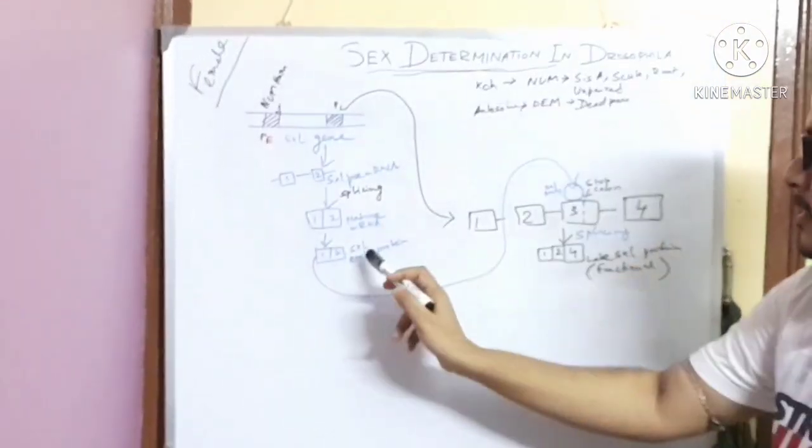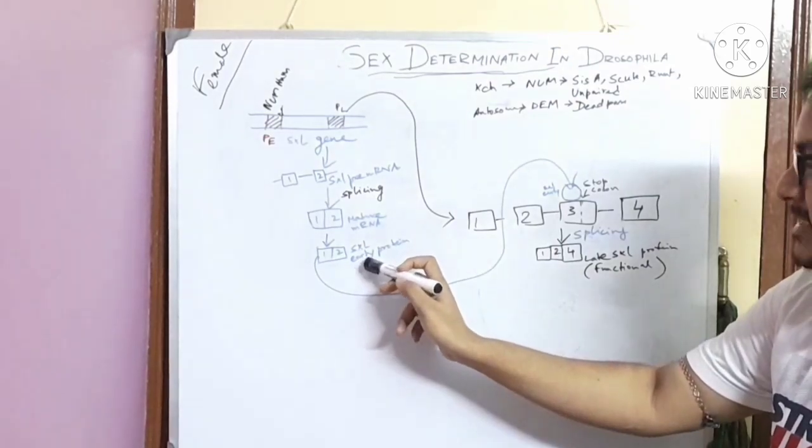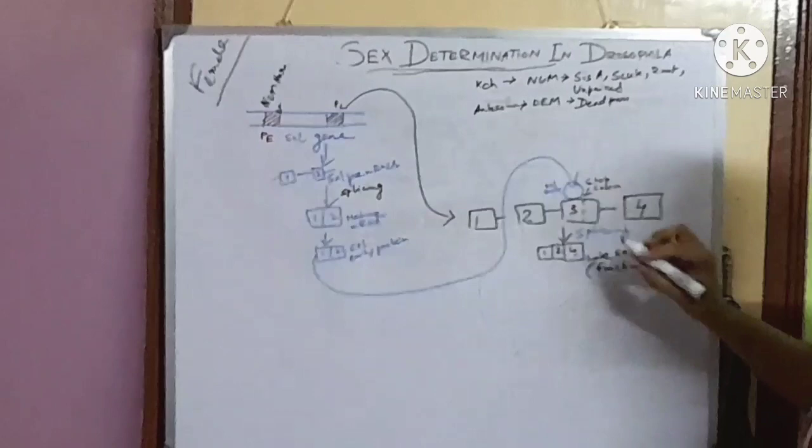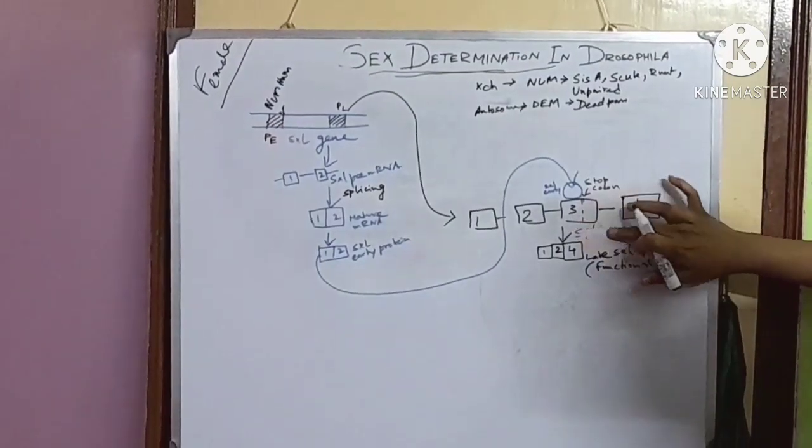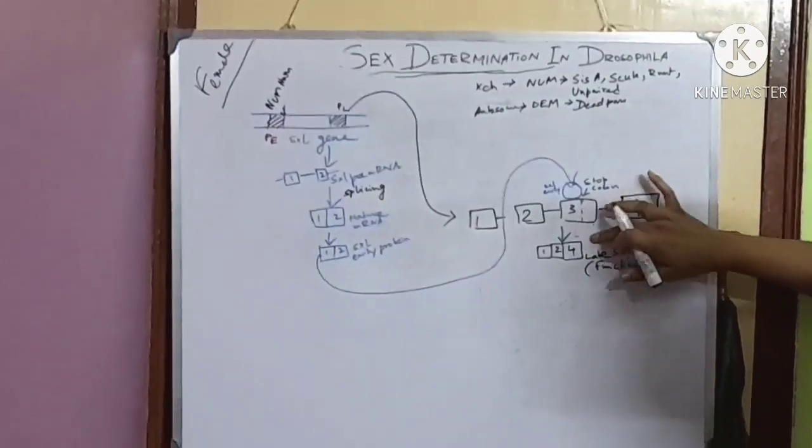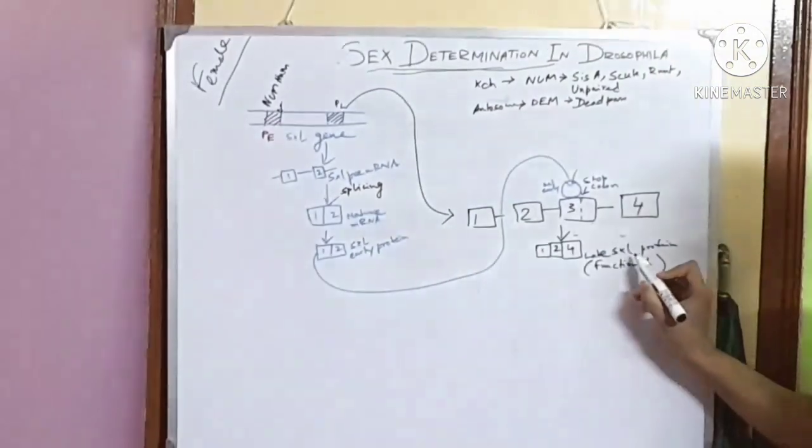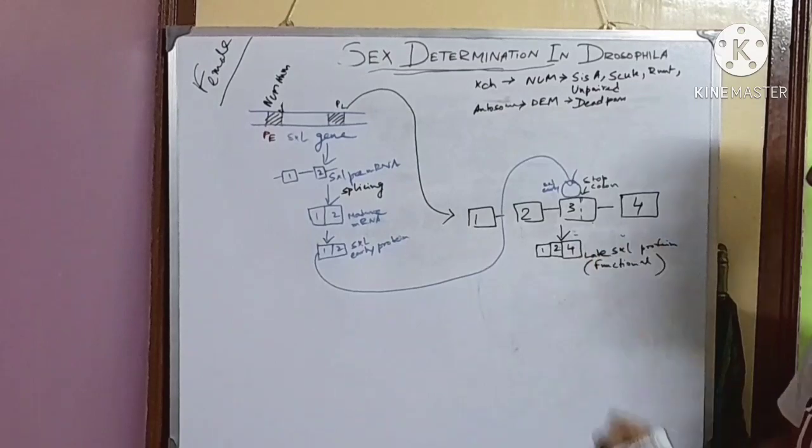In this region, the SXL early protein comes and binds to it and splices it or cuts it from the mRNA, and a functional SXL late protein is produced.